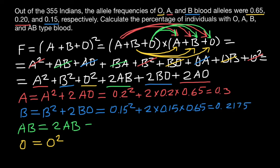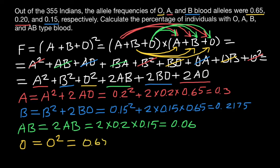For the frequency of blood group AB, we multiply 2 by the frequency of allele A (0.20) and the frequency of allele B (0.15), giving us 0.06. Lastly, the frequency of blood group O is 0.65 squared, which equals 0.4225.